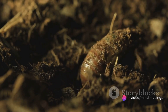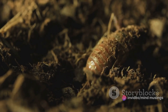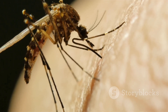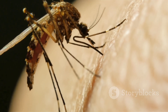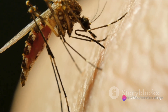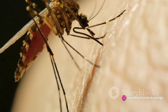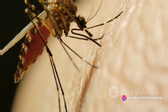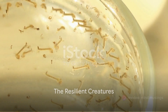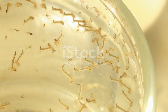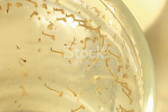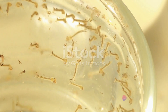Within two days, the adult mosquito emerges from the pupae, flying off to start the cycle anew. The entire process, from egg to adult, typically takes 10 to 14 days, but it can vary based on species and environmental conditions. The rapid turnover of generations allows mosquitoes to adapt quickly to changes in their environment, making them one of the most resilient creatures on our planet.